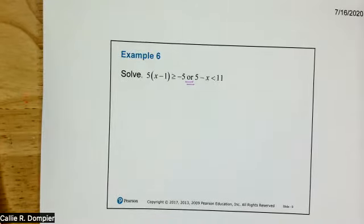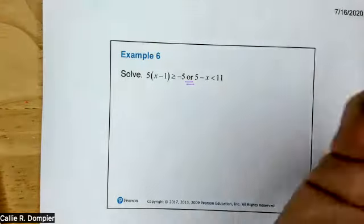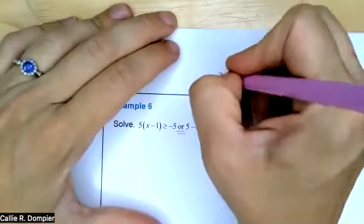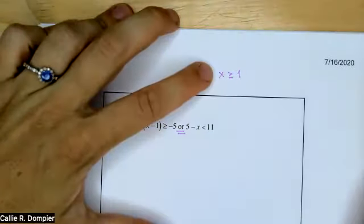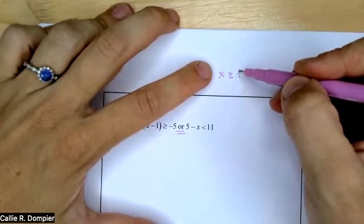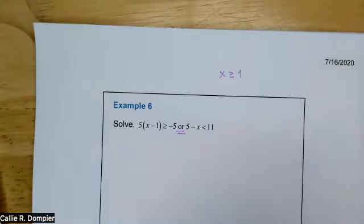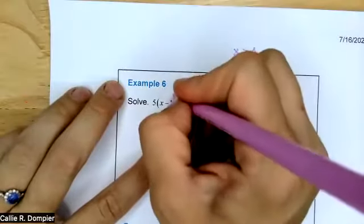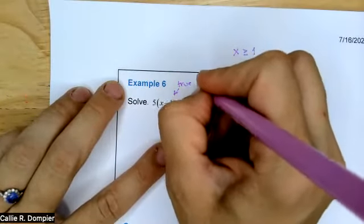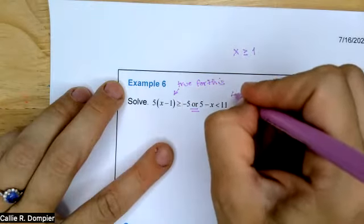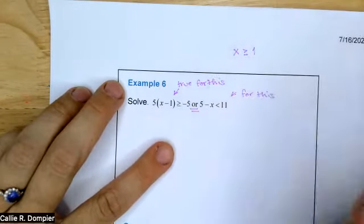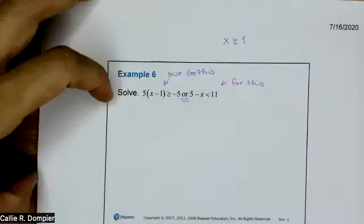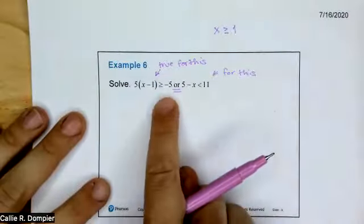Remember that or means we're taking every solution set. So anytime you have x something like this, that's the solution set because it means it's every number. For and, we needed to find only the numbers that fit both of the equations. For or, you can say it's true for this or for this — it encompasses a bigger group of solutions. We're treating them completely separately because of the or.